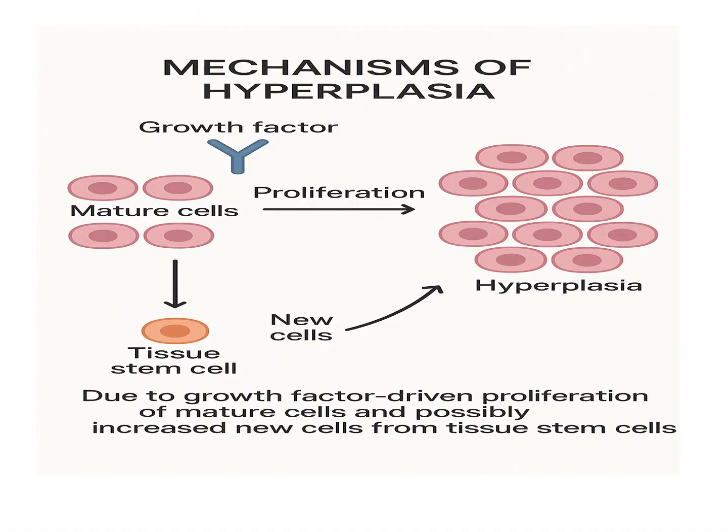The mechanisms of hyperplasia: under the influence of growth factors, mature cells proliferate to increase in number. Another mechanism involves tissue stem cells among mature cells that proliferate and give rise to new cells.